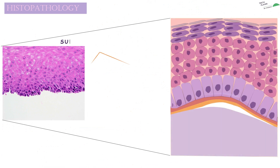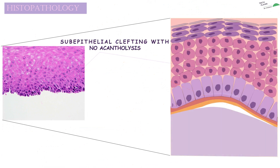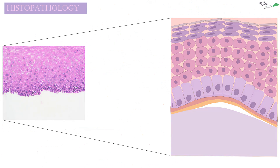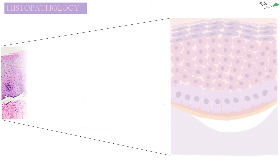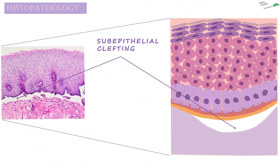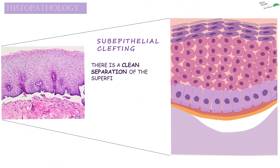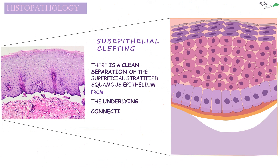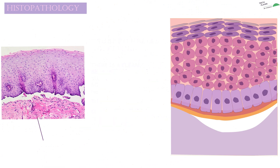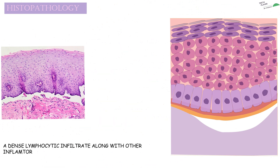Let's see the results of light microscopy. In both these slides we see sub-epithelial clefting with no acantholysis. In the sub-epithelial clefting, there is a clean separation of the superficial stratified squamous epithelium from the underlying connective tissue at the layer of the basement membrane zone. Here we also see a dense lymphocytic infiltrate along with other inflammatory cells in the connective tissue.